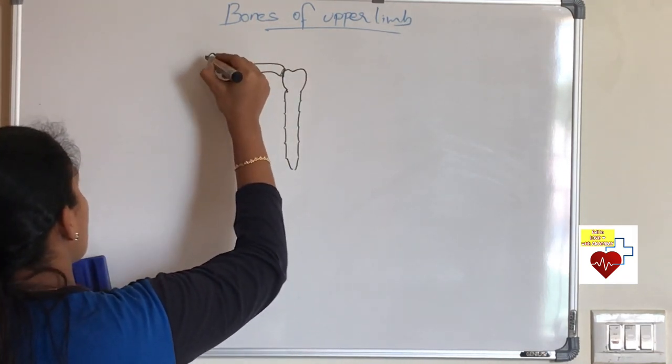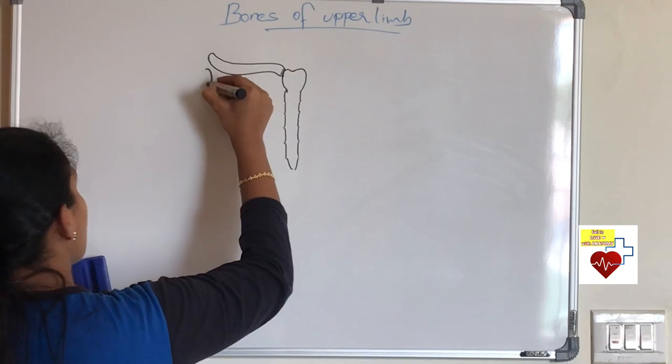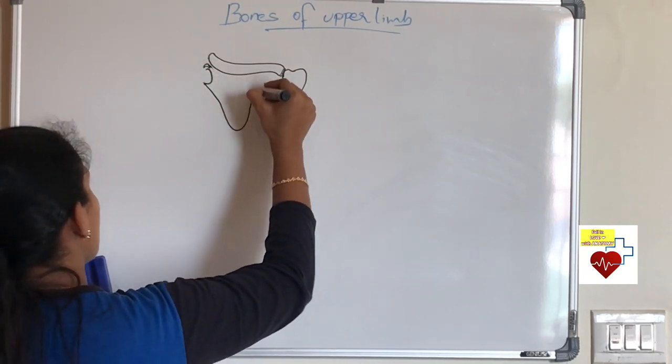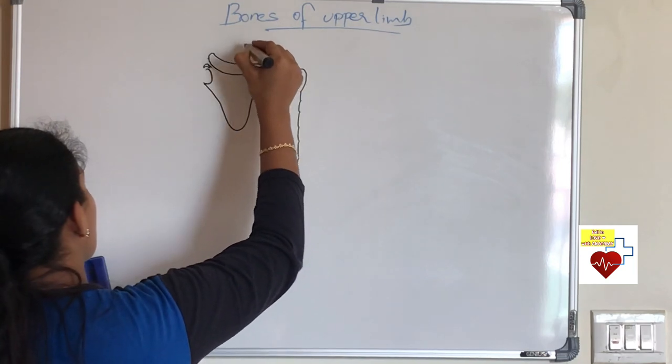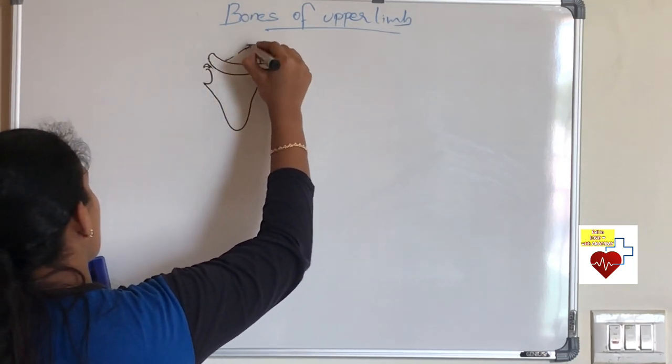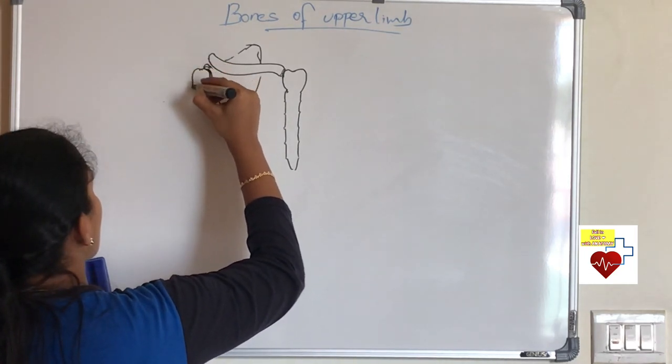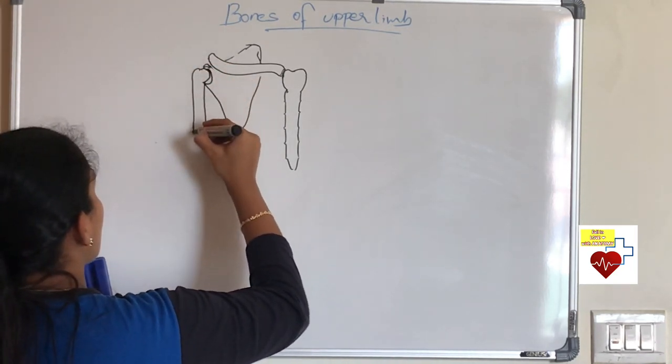Its medial end articulates with the sternum and the lateral end articulates with acromion process of scapula. Beneath you have one more process, coracoid process, and the concave facet glenoid cavity. What articulates with the glenoid cavity is our head of humerus to form shoulder joint.